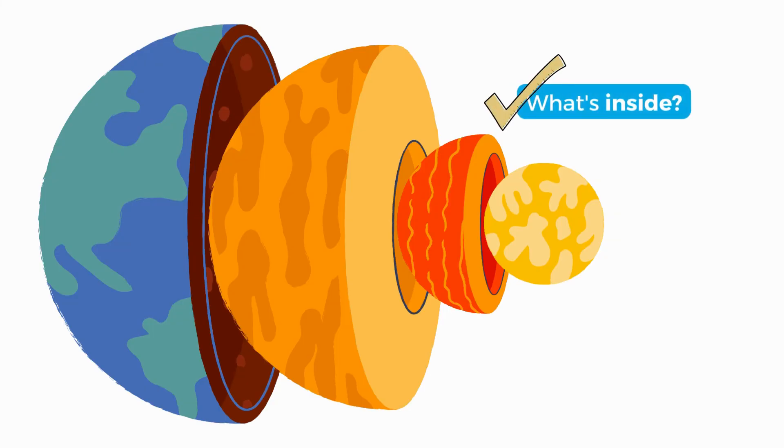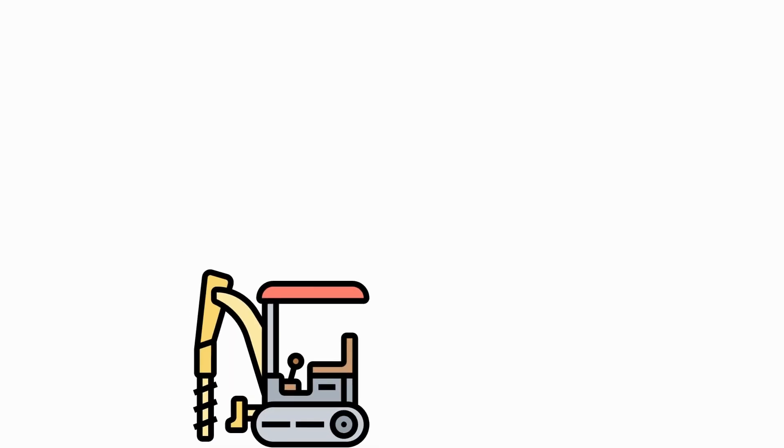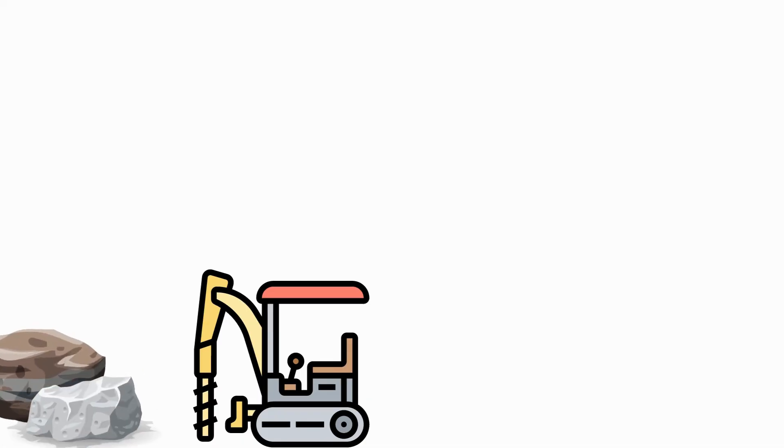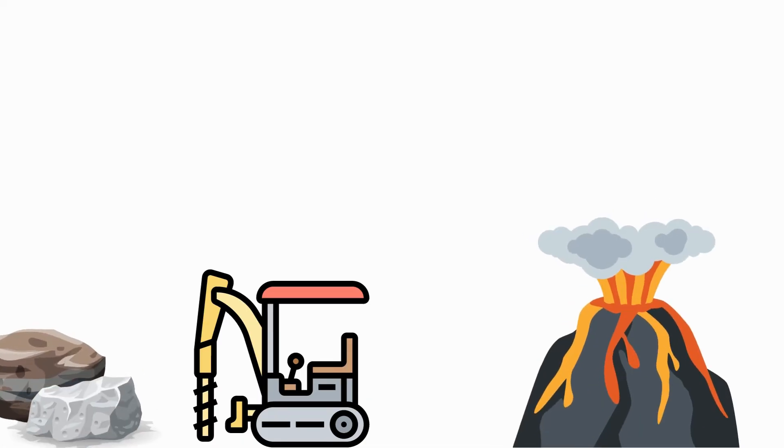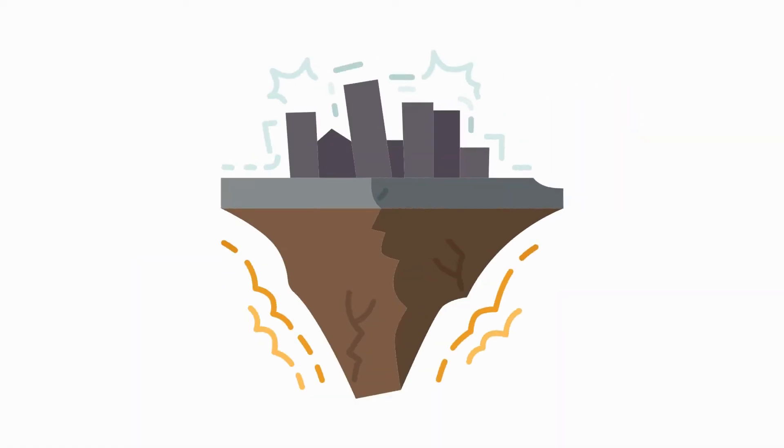Now that we know what's inside our Earth, let's talk about how we actually know this. Methods at the surface level of our Earth have informed us of what the internal structure looks like. We have used things like drilling, studying different rocks, studying volcanoes, and looking at the composition of lava. However, scientists cannot drill further than the crust, so we've had to explore other options. When earthquakes occur, they release seismic waves that reverberate through the Earth.